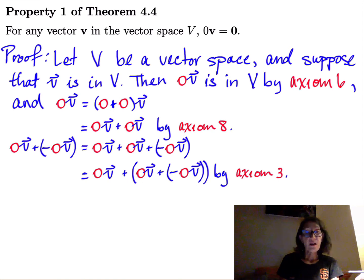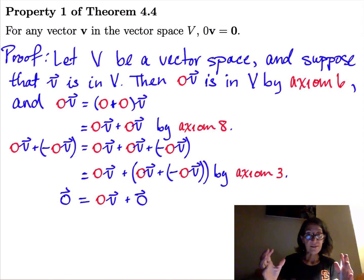On the left side, I have a vector 0 times v plus its additive inverse. So when I add those two together, I just get the additive identity vector. And that's denoted with a 0 with a hat on it. That's the same as a boldface 0. It just means additive identity vector. On the right side, I have 0 times v plus the additive identity vector, because 0v plus the additive inverse of 0v add together to be the additive identity vector. And that's axiom 5 about the additive identity vector.